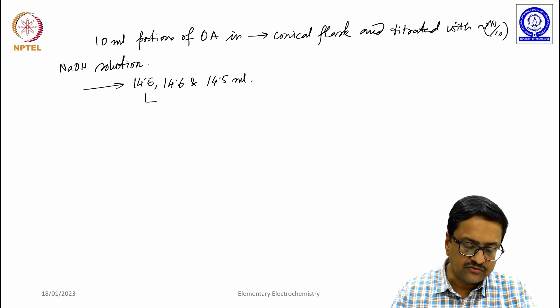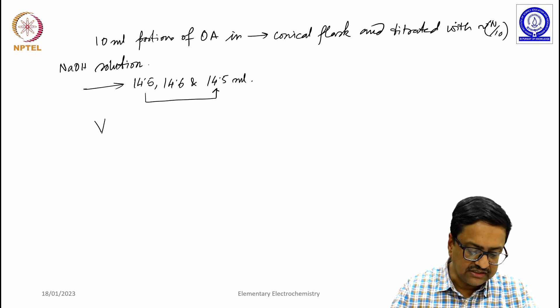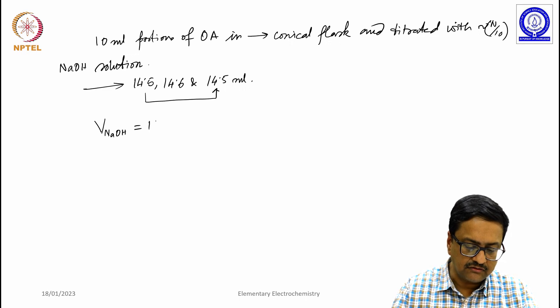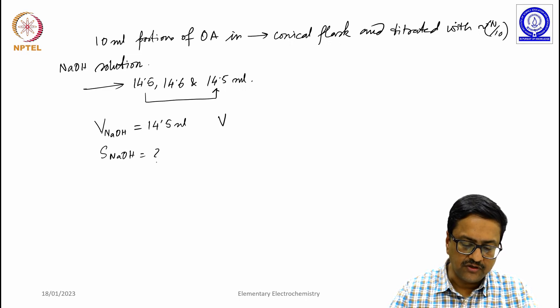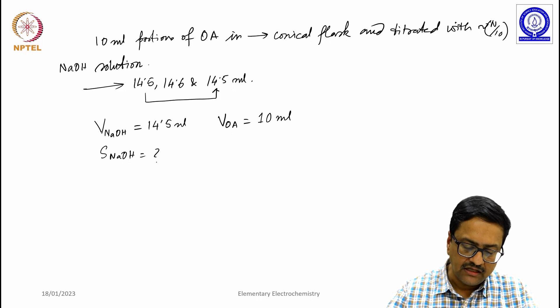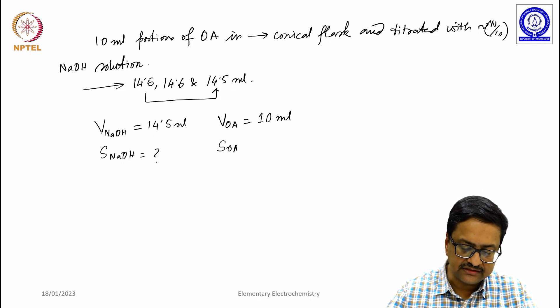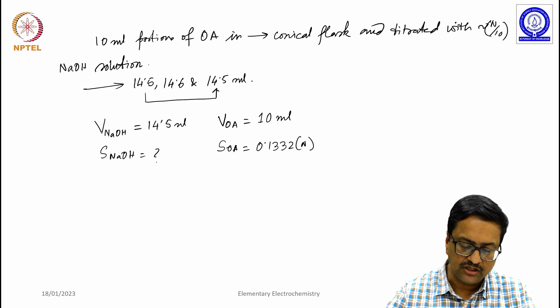We will take these two readings as concurrent readings for NaOH, and we will consider V NaOH as 14.5 ml. S NaOH is unknown. Volume of oxalic acid we took using a pipette of 10 ml volume, and strength of oxalic acid that we prepared is 0.1332 normal.